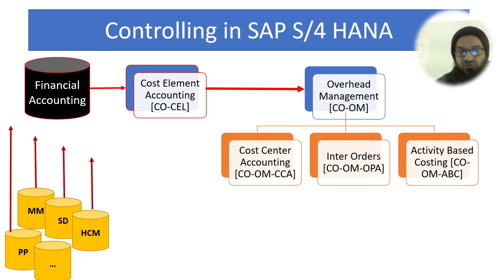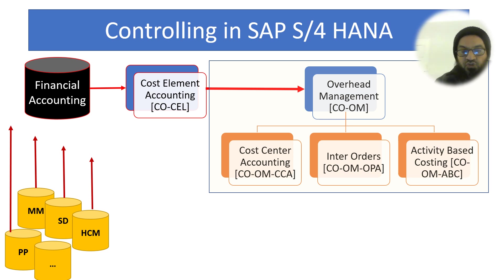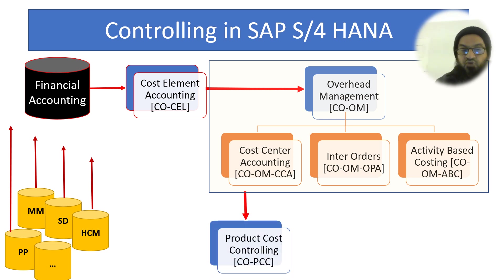All overhead expenses flow from Financial Accounting to the Controlling module through Cost Element Accounting, and eventually go to various departments, event-based cost objects (Internal Orders), or activities. The collection of these three sub-modules is known as Overhead Management — abbreviated as CO-OM — comprising Cost Center Accounting (CCA), Internal Orders (IO), and Activity Based Costing (ABC).